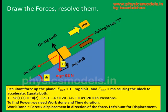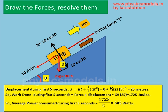Now we have to find power. To do that we have to find work done because time is known. To find work done we need force and displacement. Force we just found, so we look for displacement. Using s equals ut plus half a t squared — since we know a and t, and u is zero — we get the displacement as 25 meters during 5 seconds. Multiplying force into displacement: 69 into 25 equals 1725 joules. The average power is then 1725 divided by 5 seconds, giving 345 watts.